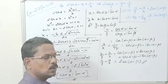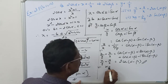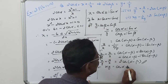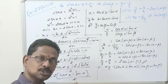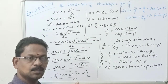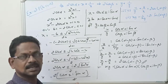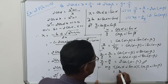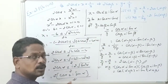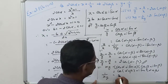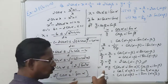Now for the second part, what is x into y? xy equals (cos α + i sin α)(cos β + i sin β). Using multiplication of two complex numbers in polar form: cos(θ₁ + θ₂) + i sin(θ₁ + θ₂). So xy equals cos(α + β) + i sin(α + β). And 1/xy equals cos(α + β) minus i sin(α + β). Adding: xy + 1/xy equals 2cos(α + β).